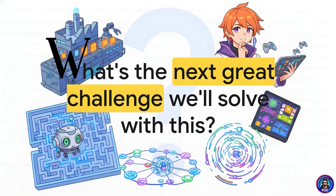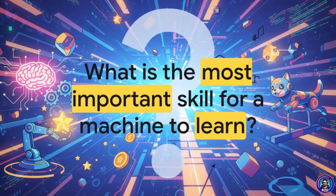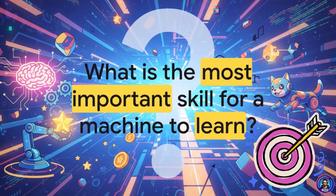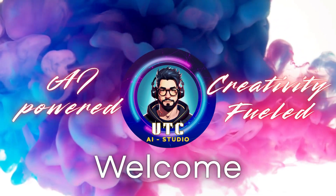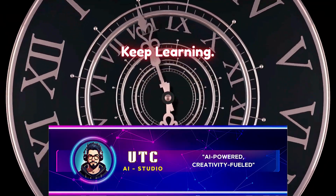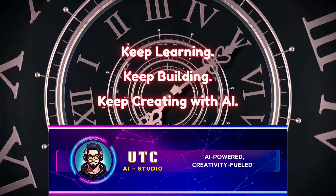Our little agent learned to solve a maze. Bigger, more complex agents are mastering games and running factories. So the real challenge isn't just building a smarter AI — it's about defining the right goals in the first place. As we give machines this incredible power to learn for themselves, we must be extremely careful about what we're asking them to achieve. The future of this tech really depends on the wisdom of the rewards we design. Thanks for watching UTC AI Studio — AI powered, creativity fueled. Keep learning, keep building, and keep creating with AI.